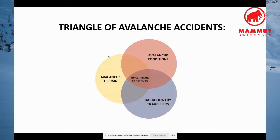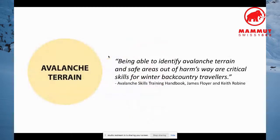Avalanche accidents occur when three things come together: avalanche terrain, avalanche conditions, and backcountry travelers. Avalanche Canada defines a list of factors that are the most important for determining the severity of avalanche terrain. When we can't control the snowpack, we can choose the terrain carefully and our exposure within it. Your route planning should be done from the comfort of your home, and once in the field, nothing will beat the power of ground truth — using your own eyes in the real world.